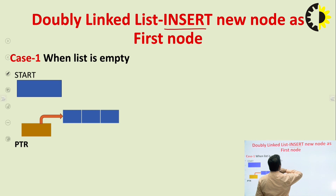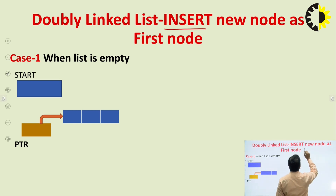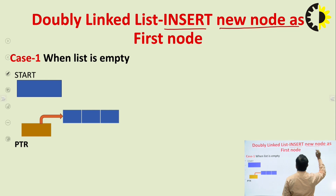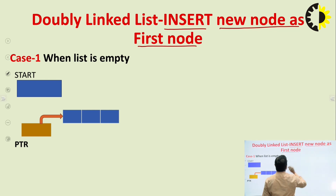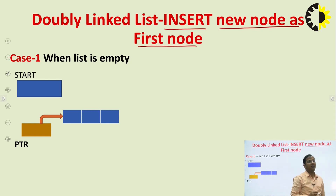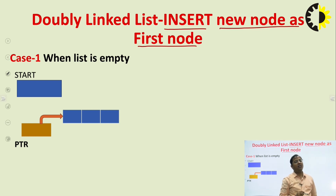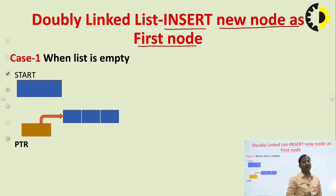Now come to the insert operation. In the insert operation, we have to discuss three base cases: insert new node as a first node, insert new node as a last node, and insert node at a given position. First we will discuss inserting a new node as a first node in the doubly linked list.